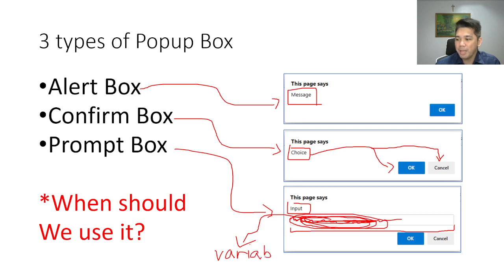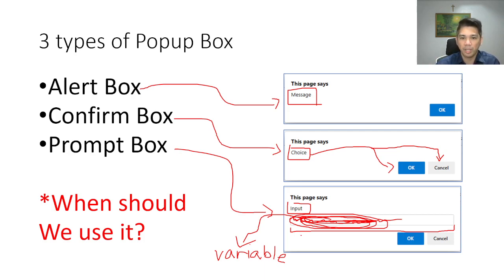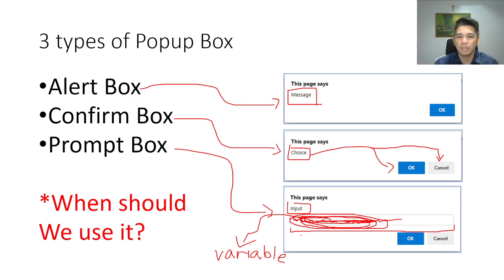Just imagine if we can ask for a number, get that value, and place it inside a variable. Once it's inside a variable, we can do several manipulations. Or maybe we can ask for a name, get another prompt box, get another name, and at the end combine those two variables together to produce a whole new value.